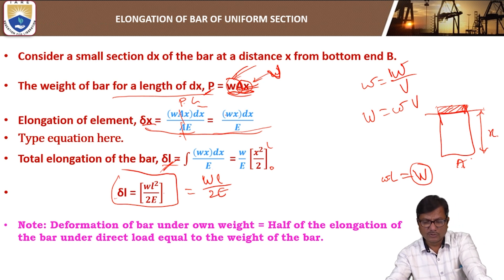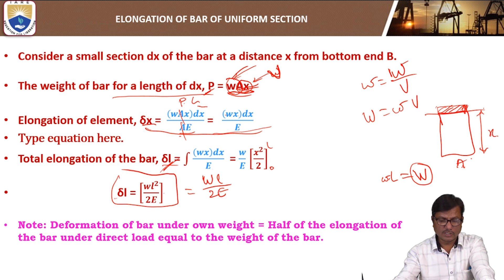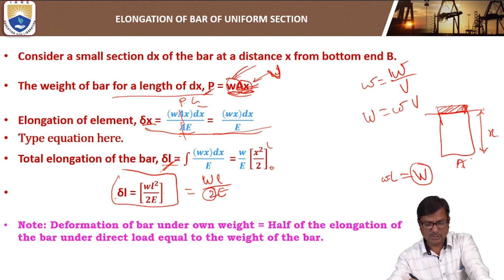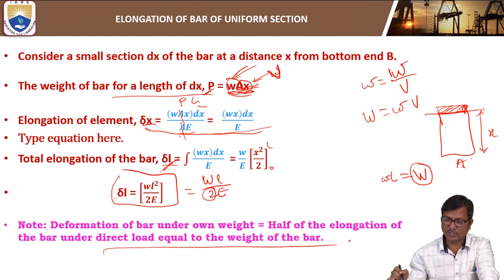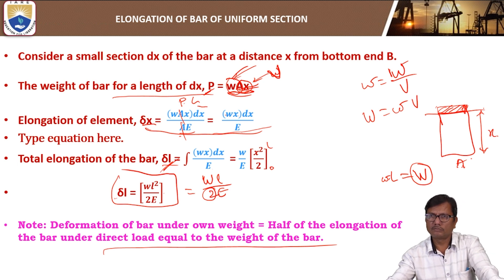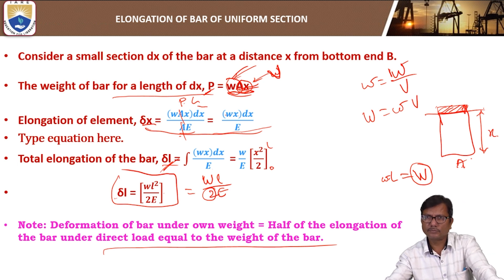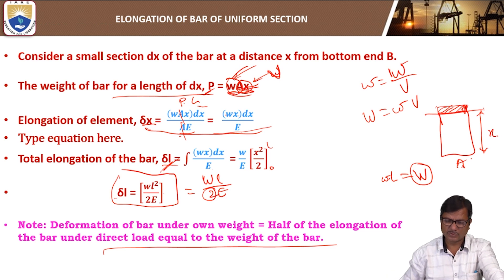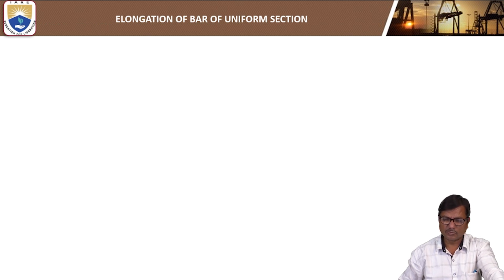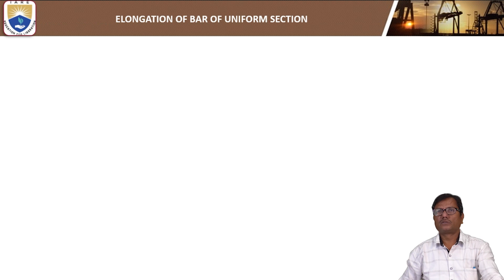The elongation of the bar due to self-weight is half the elongation that would occur if the full weight of the bar were applied as a direct load at the bottom. This is one important derivation to remember. This concludes the first topic.